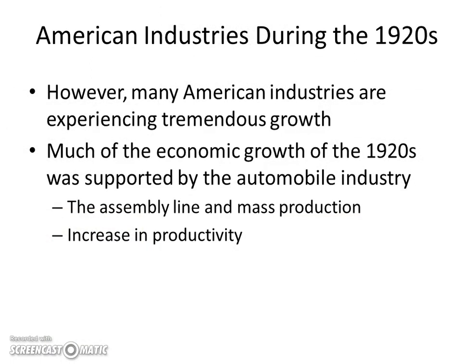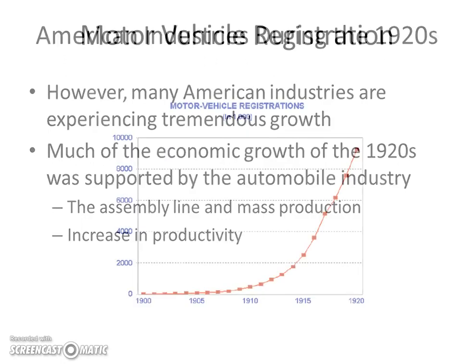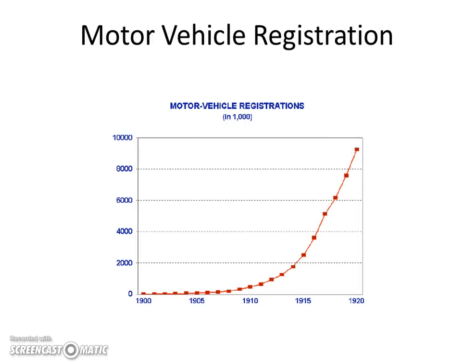However, a lot of American industries were experiencing immense growth during this time, and a lot of this growth was supported by the American automobile industry and the assembly line and mass production of cars. This led to an increase in productivity in a lot of other sectors. You see an increase in motor vehicle registration from 1900 to 1920. As the price of cars came down, more and more people could afford them, and therefore they were seeking those automobile registrations.